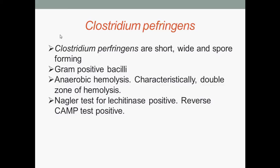The first bacterium we are going to look at in this lecture is Clostridium perfringens. Clostridium perfringens are short, wide, spore-forming, gram-positive bacilli. They exhibit anaerobic hemolysis of blood and characteristically a double zone of hemolysis — I'll show you what this means shortly. The Nagler test for lecithinase is positive, and the VAMP test is also positive.